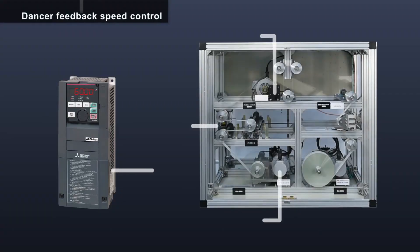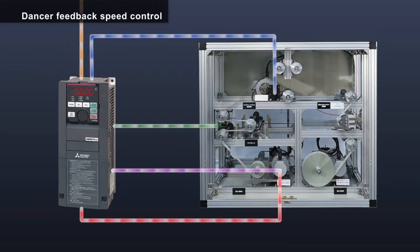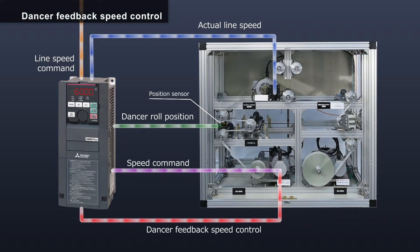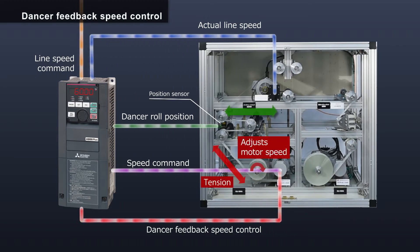The dancer feedback control maintains constant tension on the dancer roll by keeping the roll in place, utilizing line speed and dancer roll positioning data to adjust the speed of both the winding and unwinding shafts.